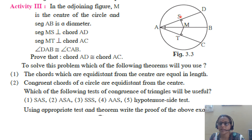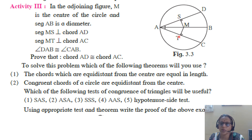MS is perpendicular to AD, so angle S is 90 degrees. MT is perpendicular to AC, so angle T is 90 degrees. AM is the common side. Therefore, triangle SAM is congruent to triangle TAM by the side-angle-angle (SAA) test.